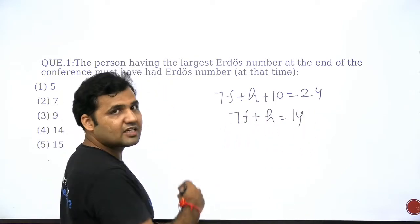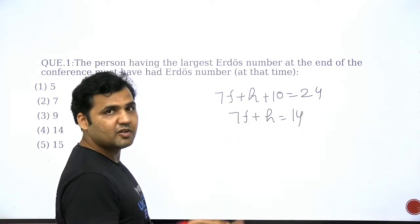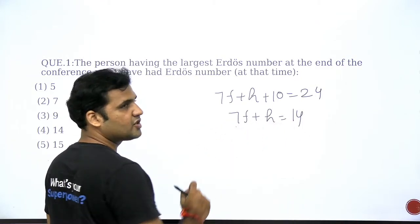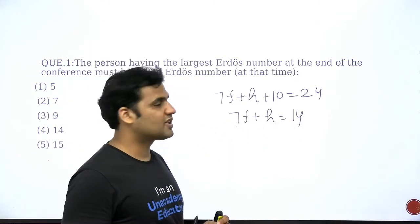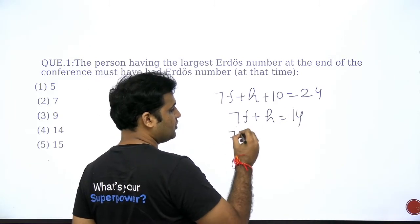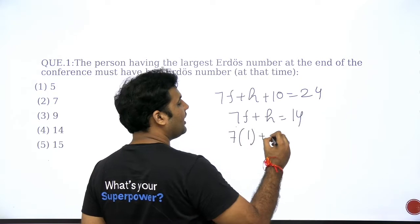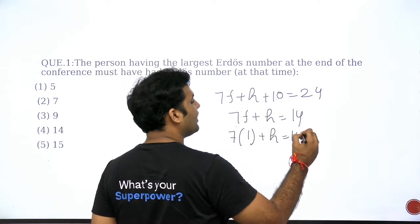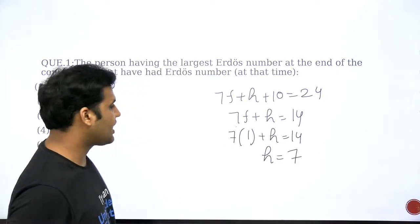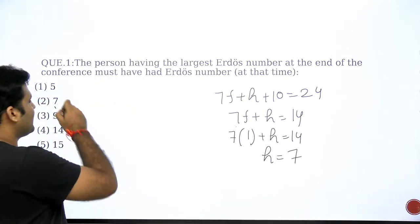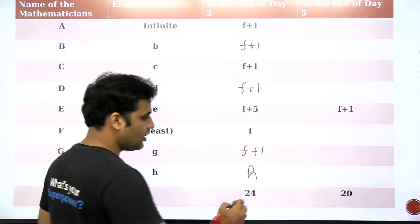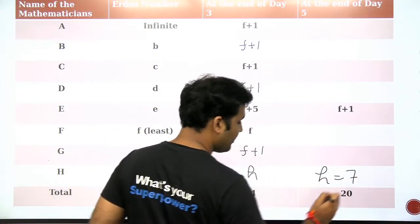F cannot be 0 because the lowest Erdos number is available with Paul Erdos only. F cannot be 2 because if F is 2, H will become 0, and H is not Erdos himself. So the only possible value for F will be 1. And if you put F as 1, the value of H will be 7. So the largest Erdos number is 7. This was the first question discussed in the first part of the video, and H will remain 7.